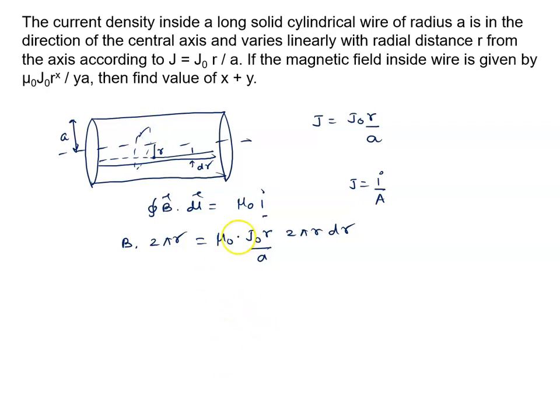We integrate it and calculate. What do we get? B into 2πr equal to μ₀J₀ upon a into 2π. r²dr can be written as r³ by 3.